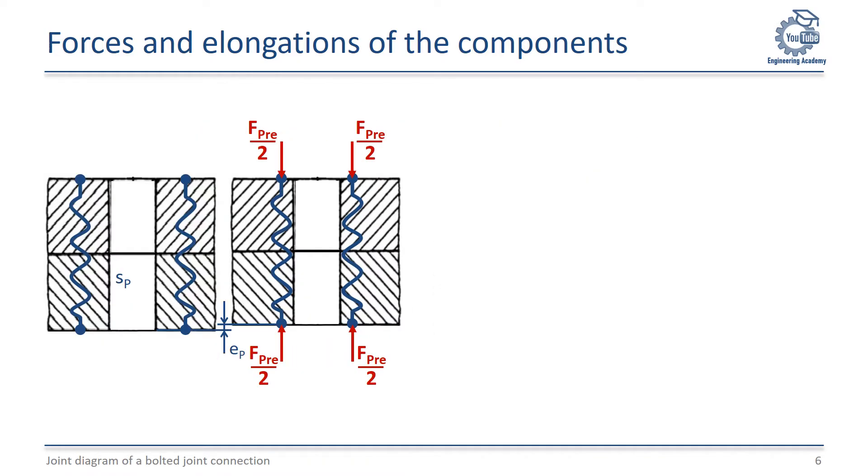This compression by EP is now plotted in this force elongation diagram. The linear elastic correlation between force and elongation is given by the stiffness SP of the plates. The compression is recorded to the left in negative elongation direction because of the shortening of the plates.